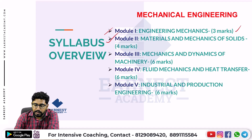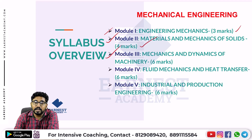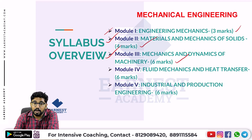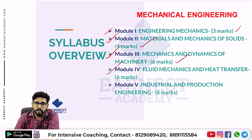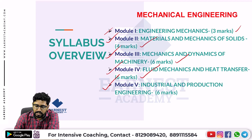The 2nd module is Materials and Mechanics of Solids. The 3rd module is Mechanics and Dynamics of Machinery. The next is Fluid Mechanics and Heat Transfer, combined for R marks. The next is Industrial and Production Engineering, also R marks.